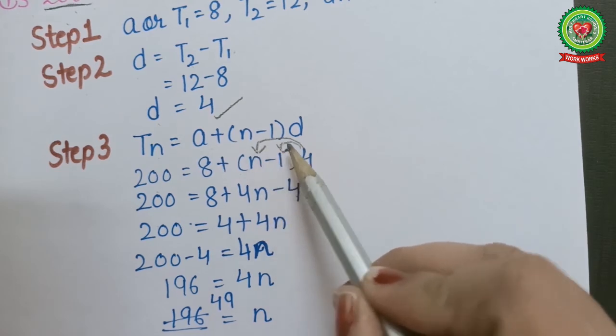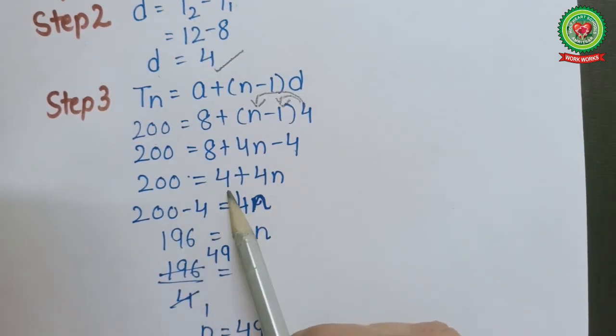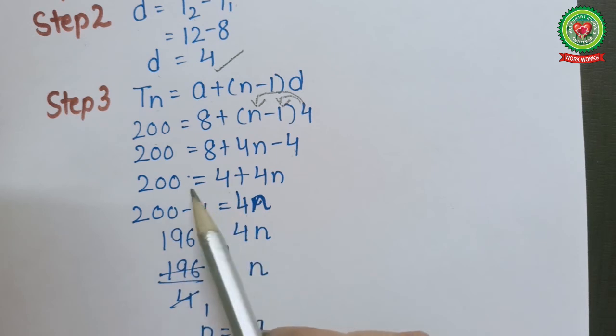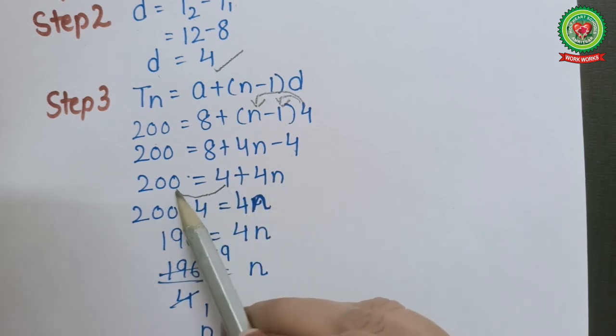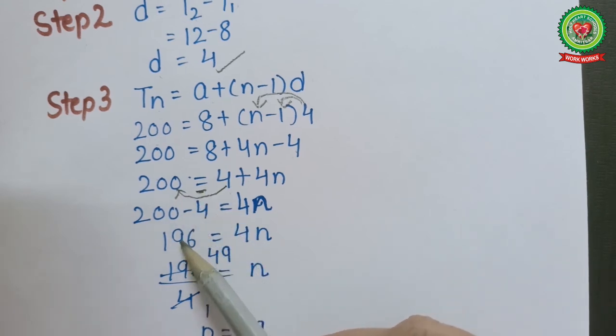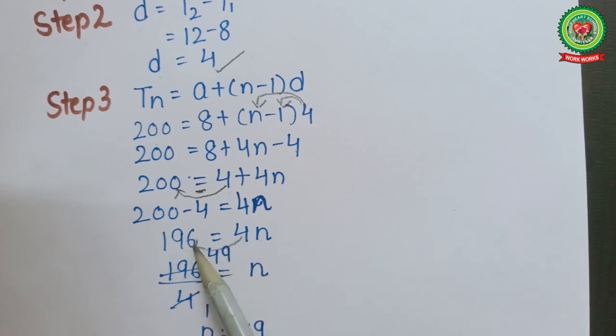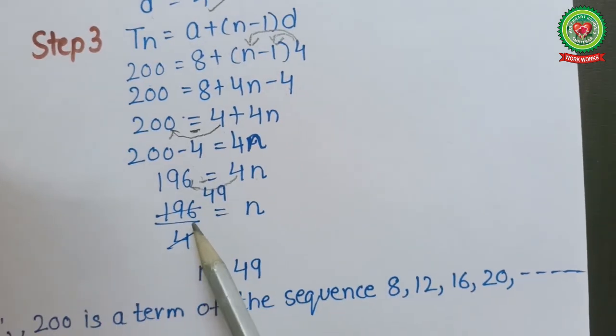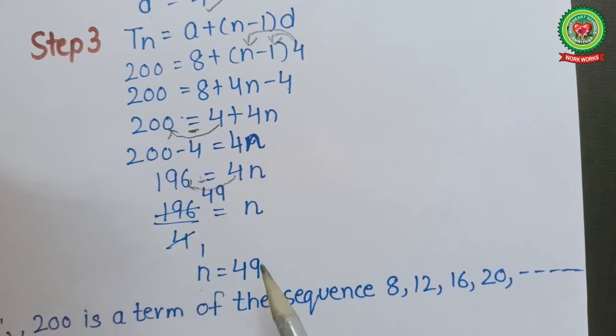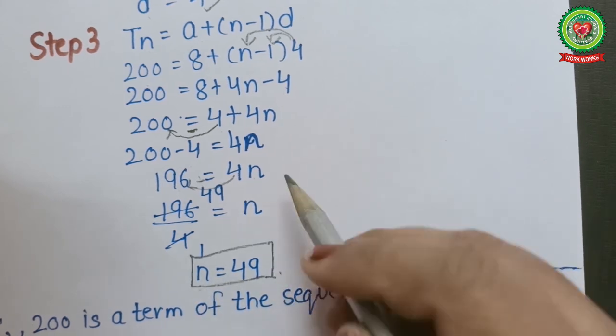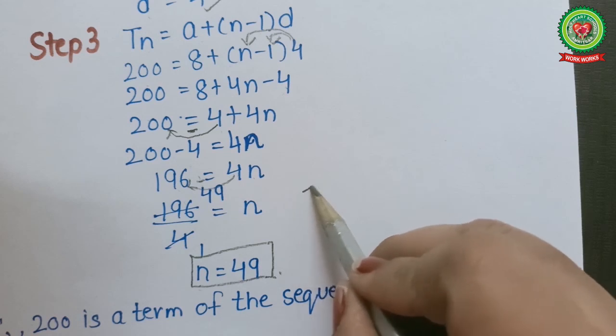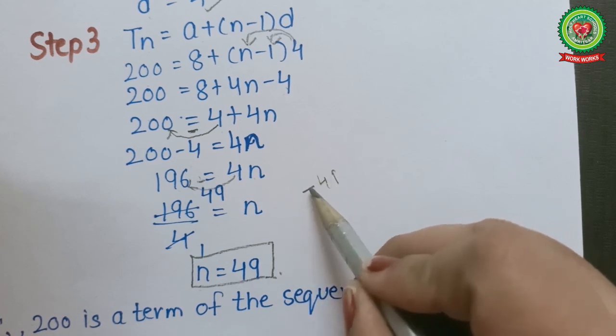We will get 200 = 4 + 4n. Shifting 4 to the other side it will change sign: 200 - 4 = 4n, which gives 196 = 4n. 4 will divide: when dividing 196 by 4, n = 49.